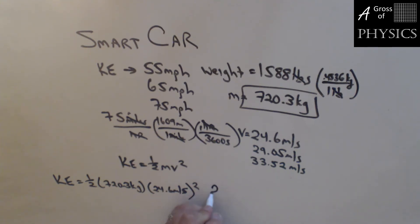So 0.5 times 720.3 times 24.6 squared, I'm going to get 2.2 times 10 to the 5 joules of energy. That's at 55 miles per hour.